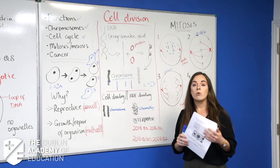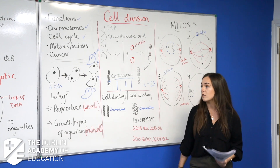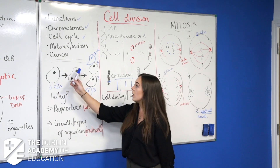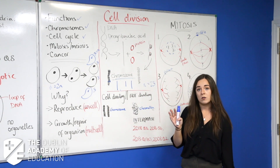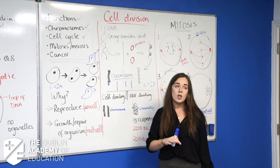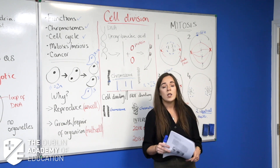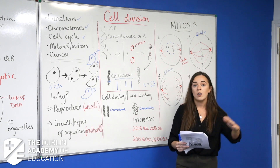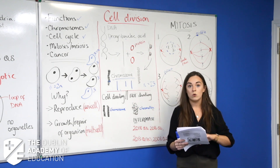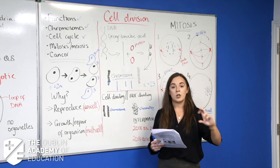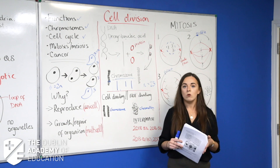For the Leaving Cert, we're mainly focused on mitosis. You need to know the process of going from one nucleus to two nuclei to two new cells. Mitosis is divided into four stages — each with a name. You need to know the order, the events happening at each stage, and the diagrams. We're going through those stages now, along with a checklist in the notes.